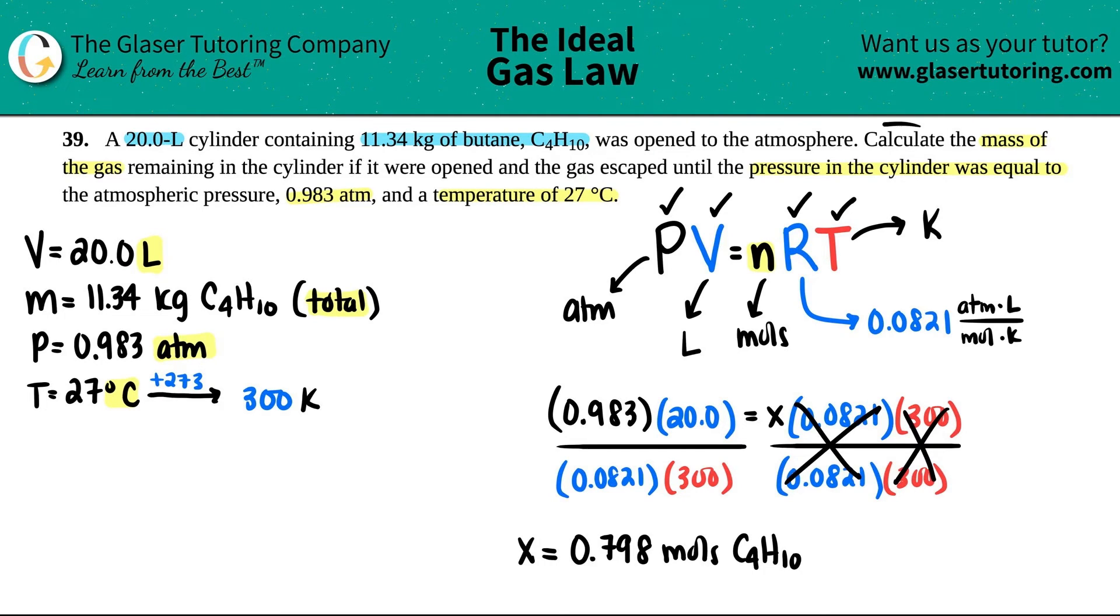Now they wanted to calculate the mass remaining, right? They didn't want the moles. They wanted the mass. So all we have to do, I'm just going to pull this over here. All we have to do is just convert the moles into the mass, AKA grams, right? So times by a ratio, we know how to go from grams to moles or moles to grams. Moles goes on the bottom. So mole of C4H10 goes on the bottom and gram of C4H10 goes on the top.